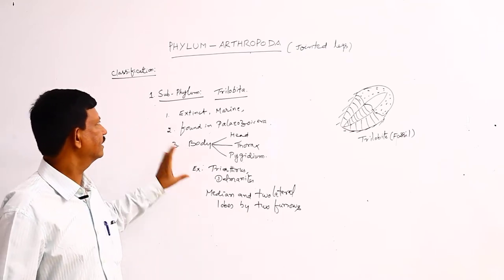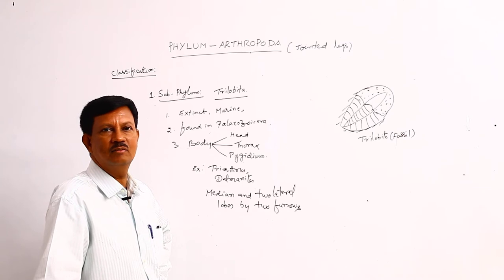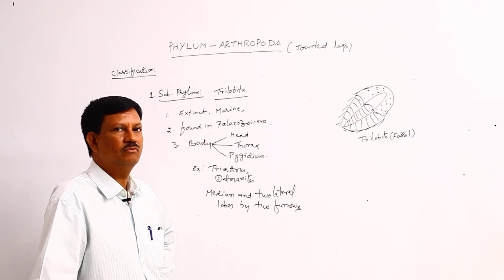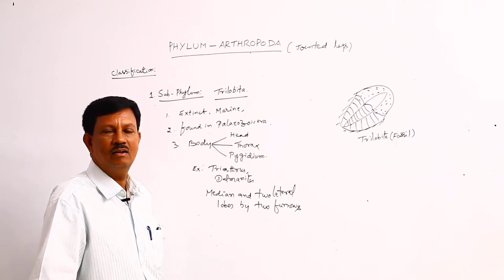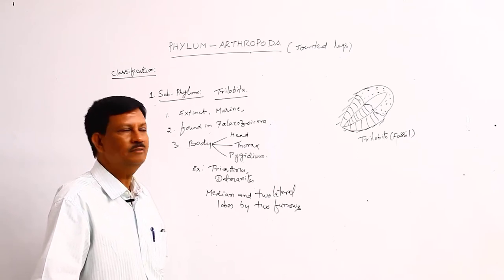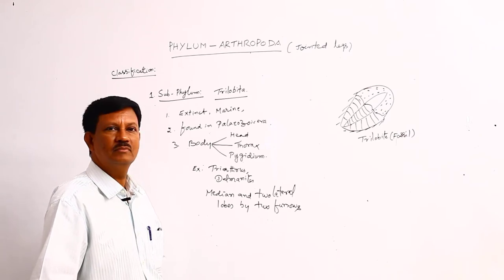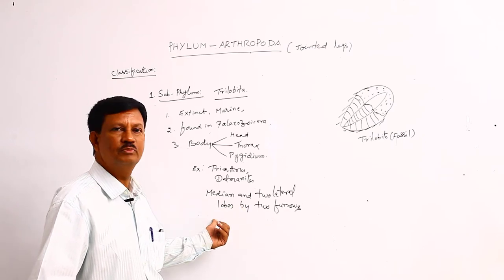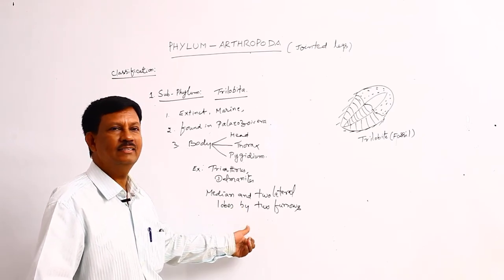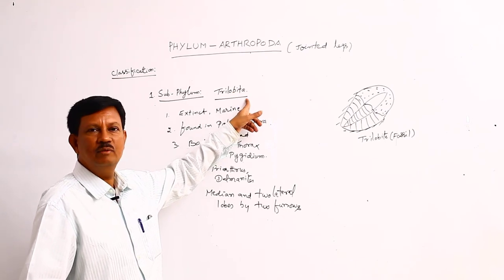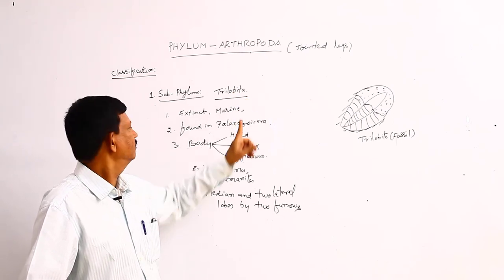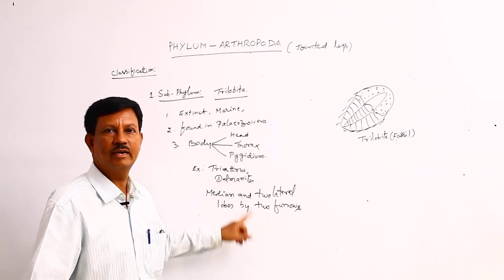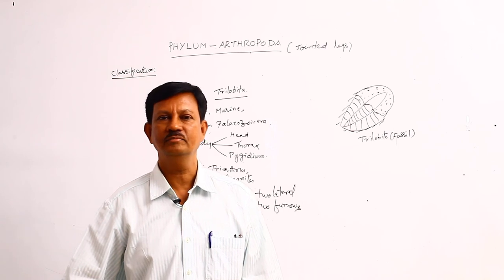These are the main characteristics. To review: they are extinct marine animals found in the Paleozoic era. The body is divided into head, thorax, and pygidium. In the body, a median and two lateral lobes by two furrows are present. Hence, the subphylum name is derived as Trilobita. Best examples are triarthrites and dolmanites.